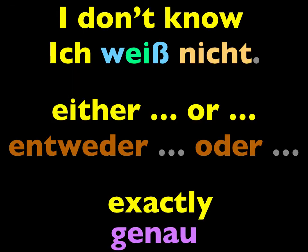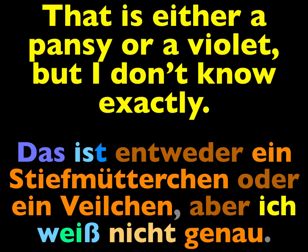Repeat these three expressions: Ich weiß nicht. Again, ich weiß nicht — that's a very good expression to know. The second one: entweder, oder. Again, entweder, oder. Genau. Again, genau. All of these show up in the next sentence. Repeat: Das ist entweder ein Stiefmütterchen oder ein Veilchen, aber ich weiß nicht genau.